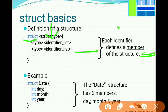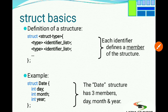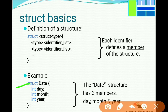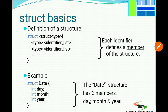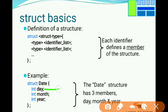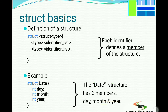A dot operator is used on the left side and right side to access structure members. For example, a structure may have three members: day, month, and year. You need to write variables for day, month, and year. If you use a structure, you write them as members. A structure variable is not just the member name — the structure variable is the whole date variable.